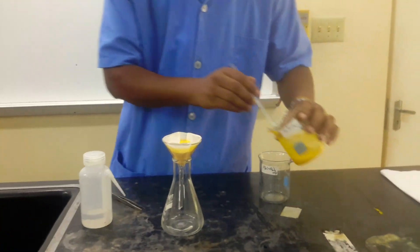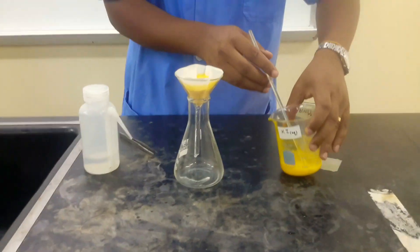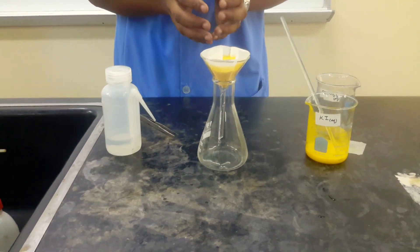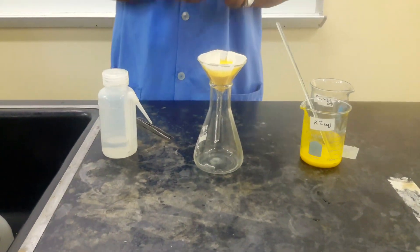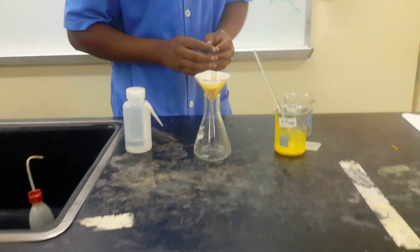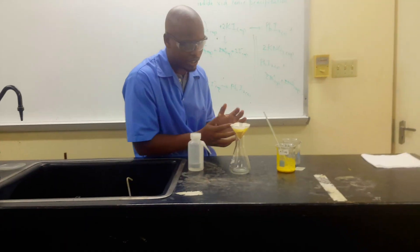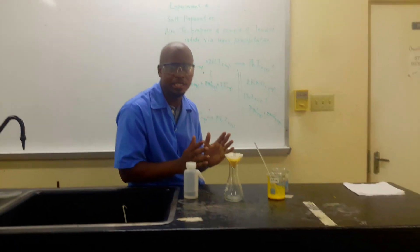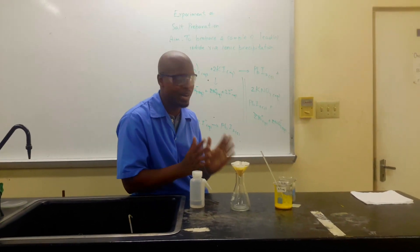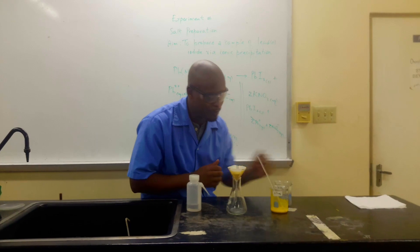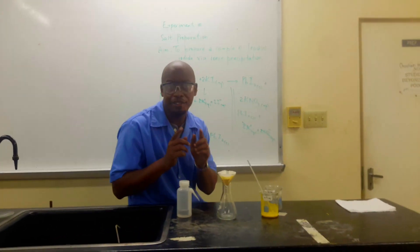So our filtrate based on our equation is potassium nitrate going through. And then our yellow solid that remains in the filter paper as the residue is our lead iodide. So we'll just wait on this and we'll come back a little later when we're finished to just pat it dry. We'll just put it in a paper towel.